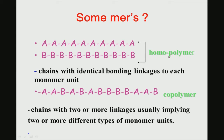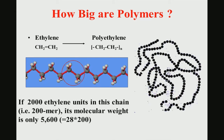A homopolymer means the repeating unit is the same identical organic radical with identical bonding linkages to each monomer unit. Chains with two or more different linkages — like A, B, A, B — are called copolymers. In a copolymer, A and B have different chemical formulas and different chemistry, but they are linked together along the backbone chain to make the polymeric material.